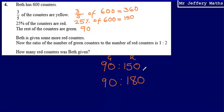So how many red counters was Beth given to go from having 90 to 150 to 90 to 180? Well, what we can say is that we would have needed 30 more red counters. So how many red counters was Beth given? Our answer here is going to be 30.